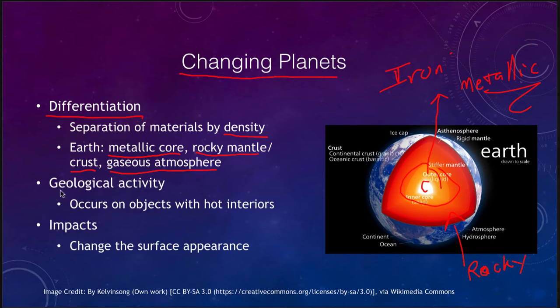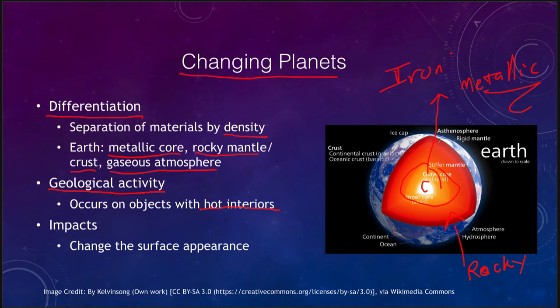Other things that can change a planet's surface include geological activity. If a planet has a hot interior with internal heat, you can get geological activity — here on Earth we see that in plate motions, volcanic activity, earthquakes, and various other geological processes. These reshape the surface, meaning craters or other land features can be wiped out by volcanic eruptions. This constant state of change occurs not only on planets but also on many of the moons we will look at.